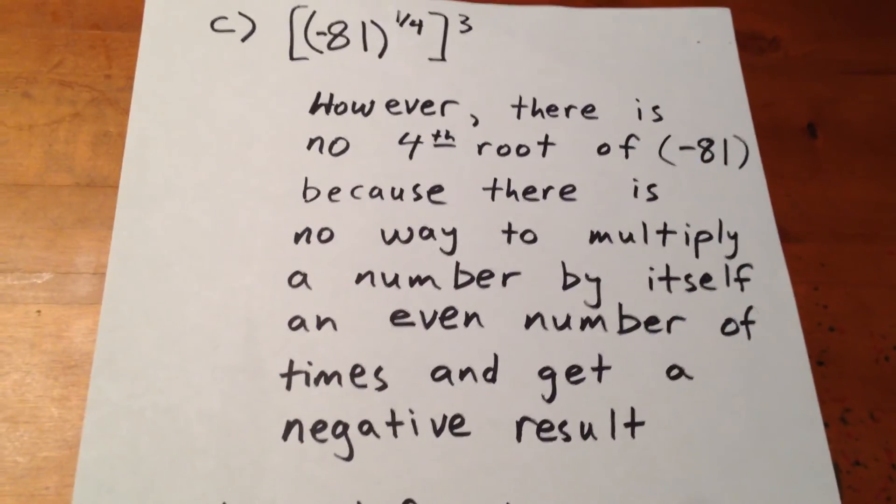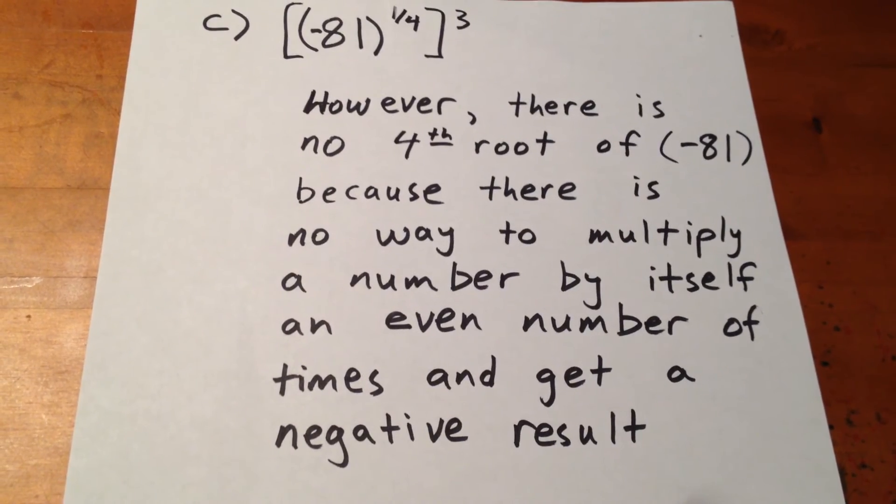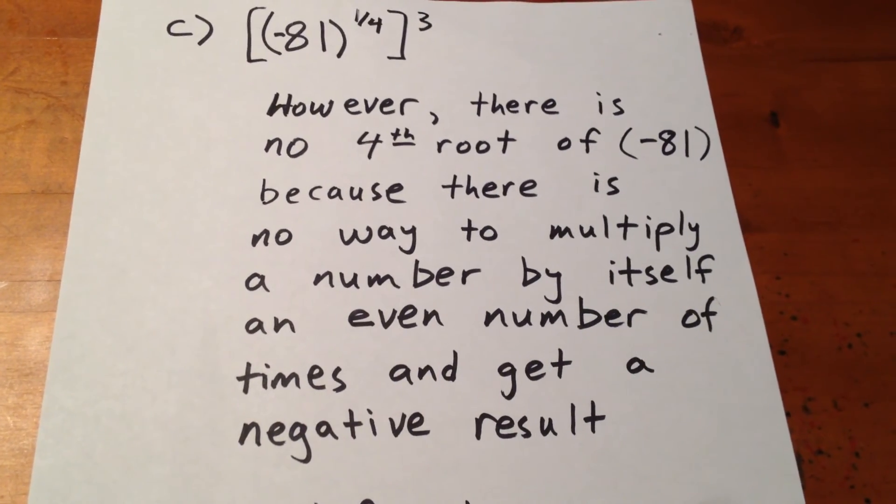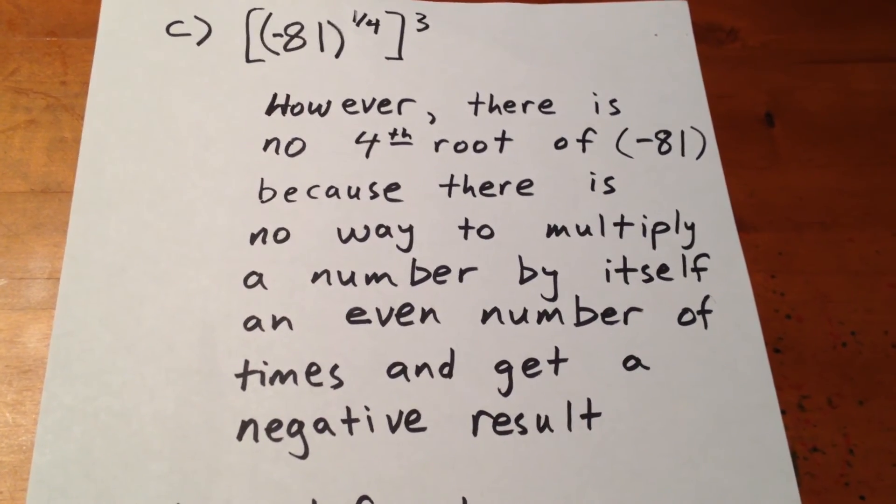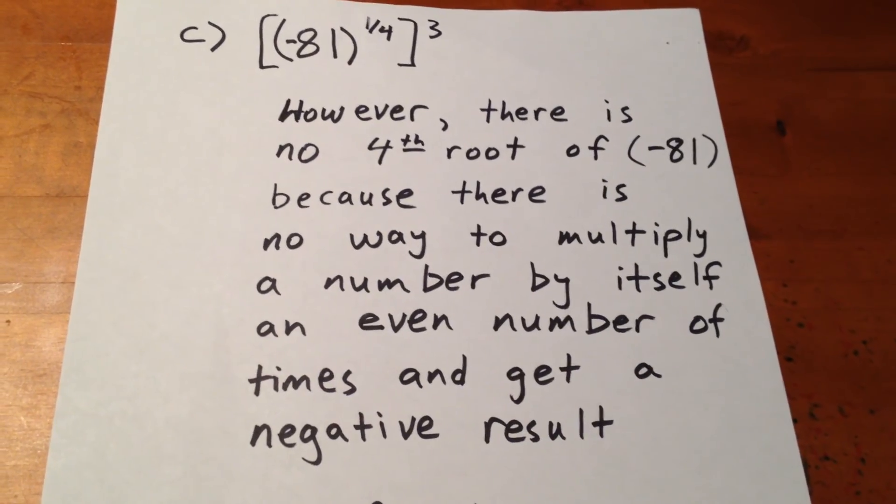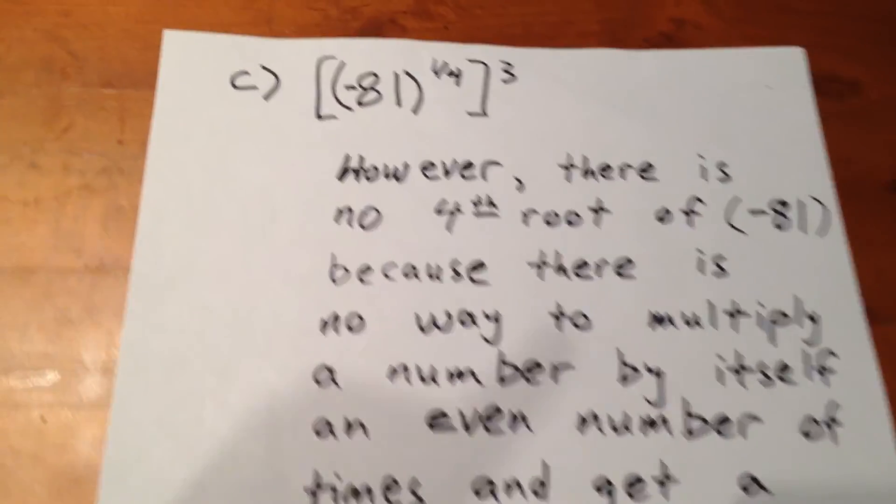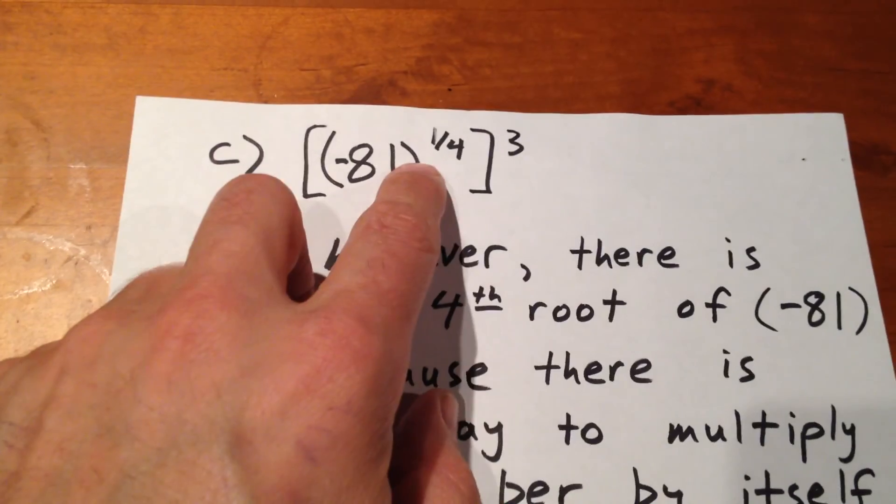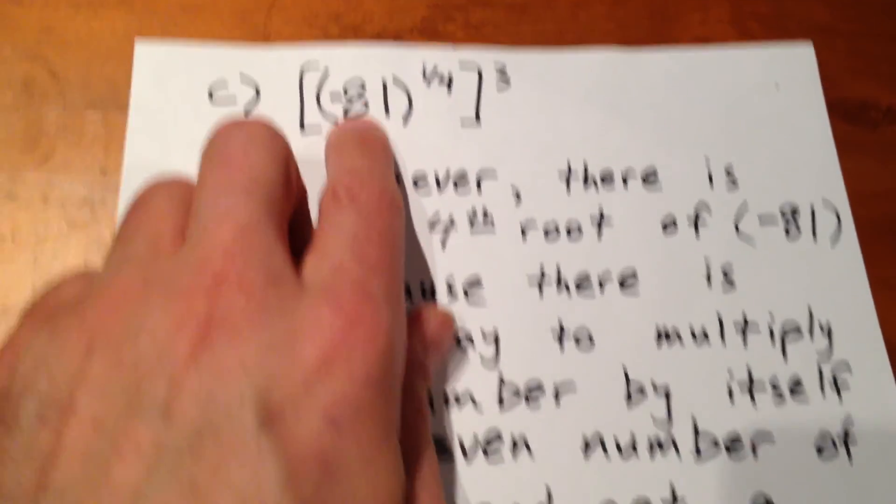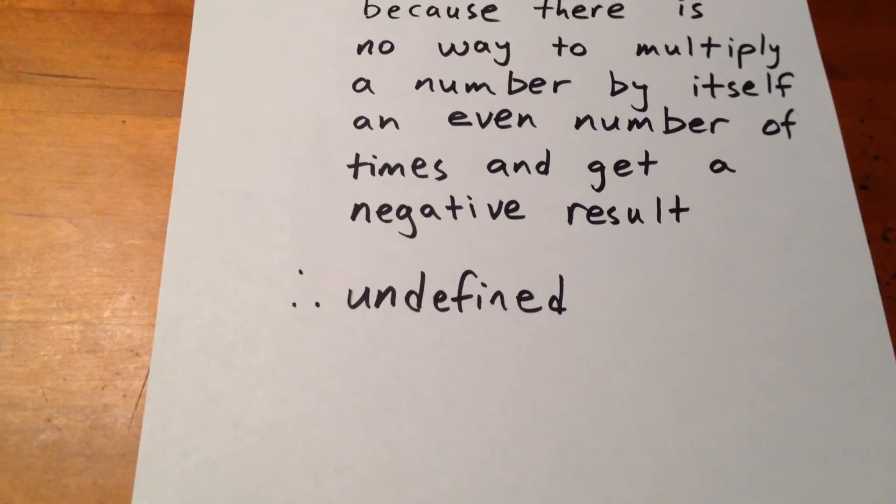However, there is no fourth root of negative 81 because there is no way to multiply a number by itself an even number of times and get a negative result. That means the fourth root of negative 81 does not exist. So, that means this whole expression is undefined.